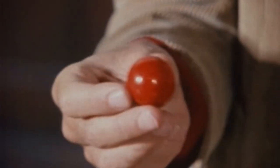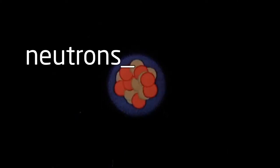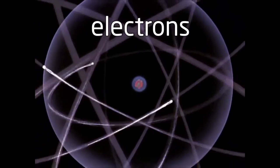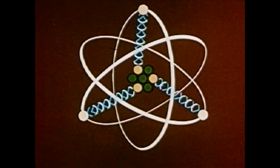A proton has a positive electrical charge. A neutron is electrically neutral. And an electron has an equal negative electrical charge. Since every atom is electrically neutral,